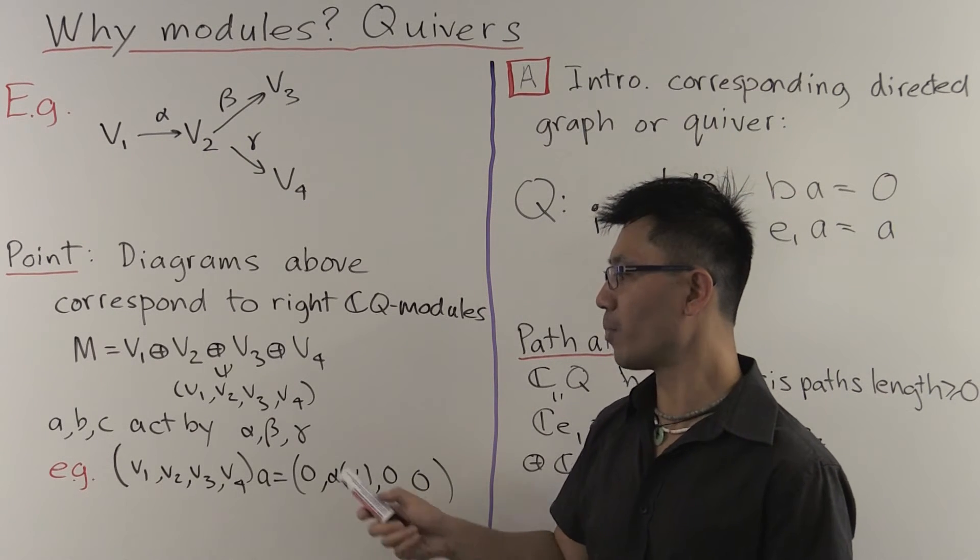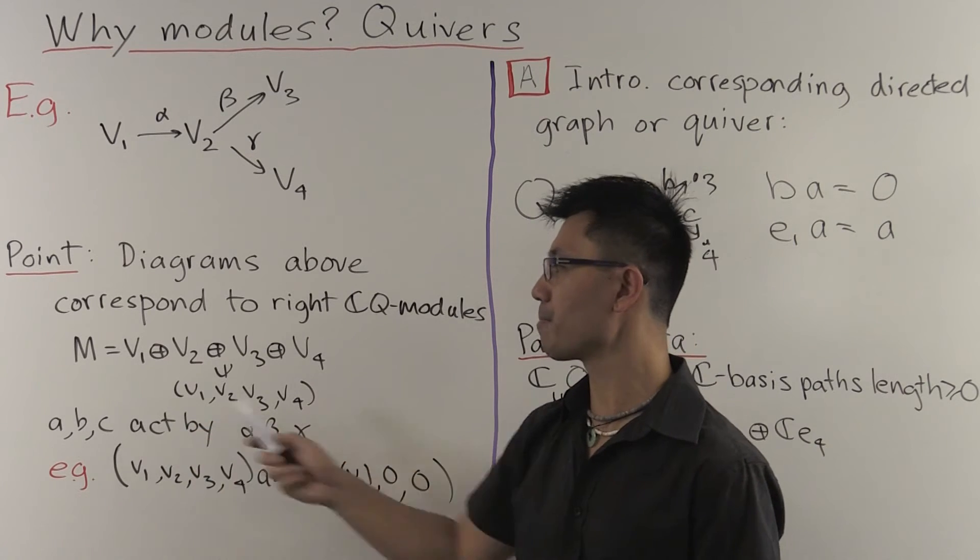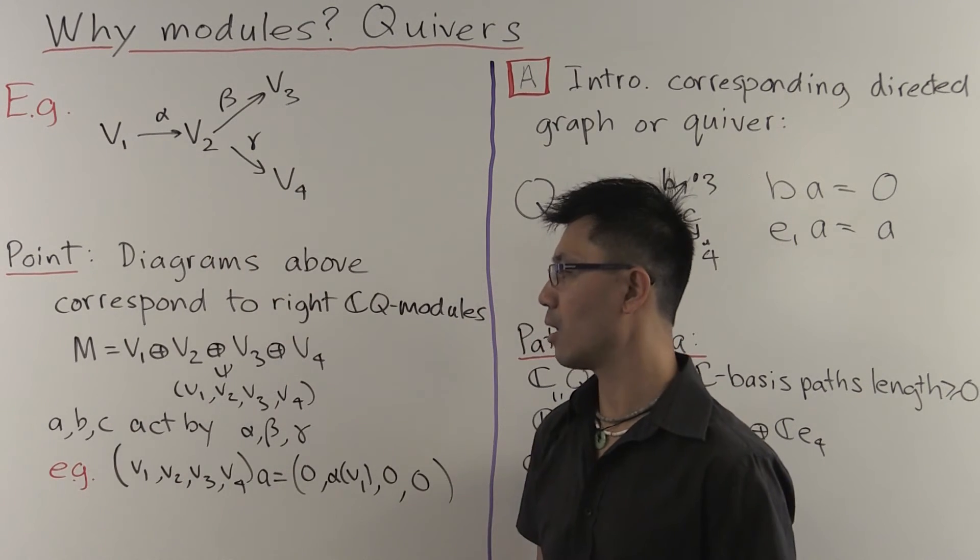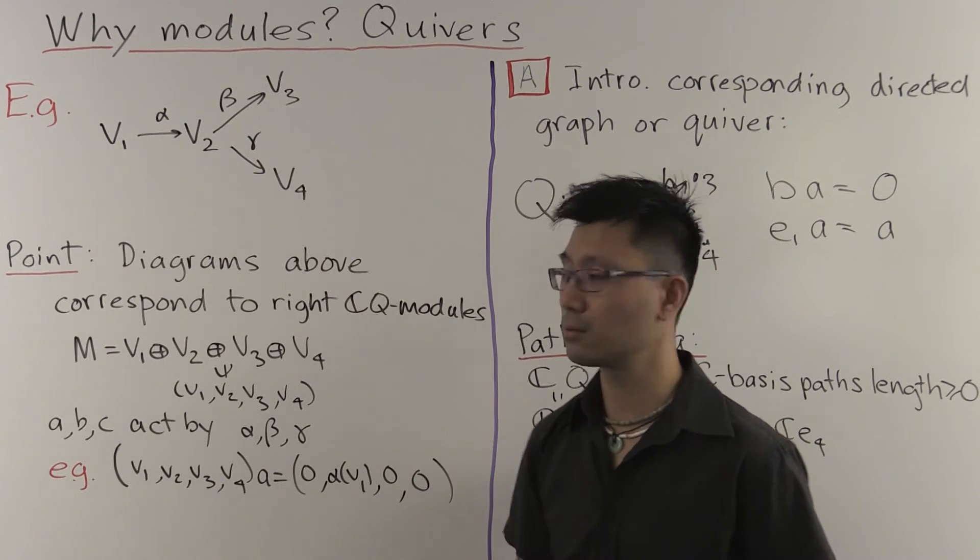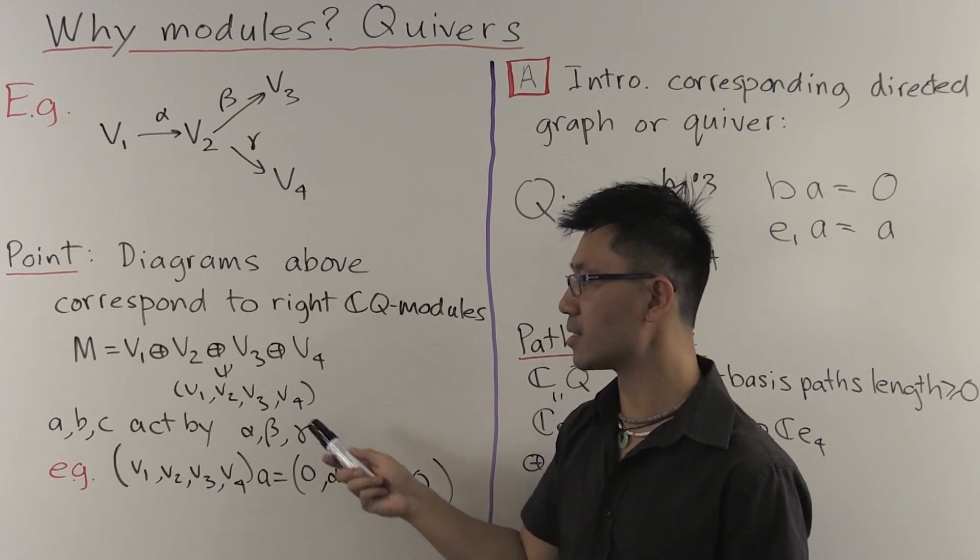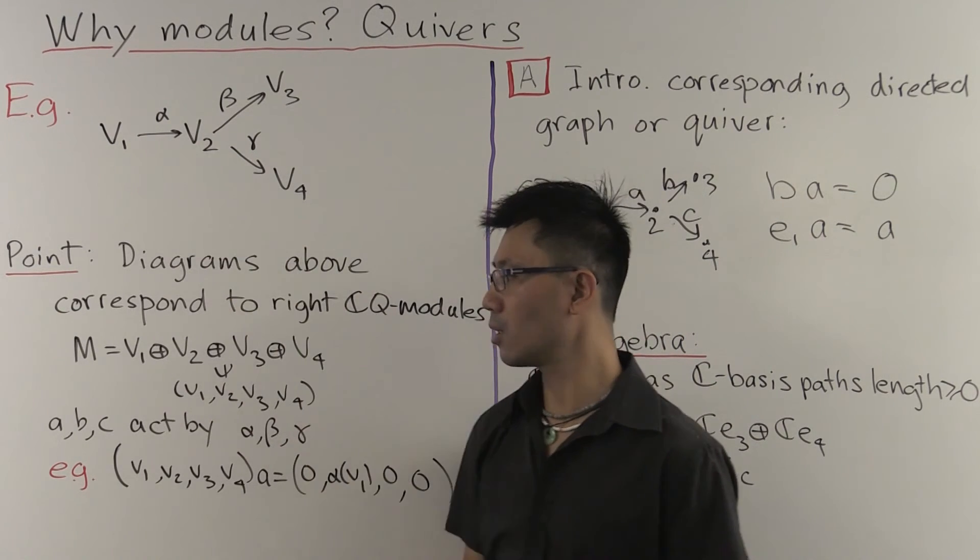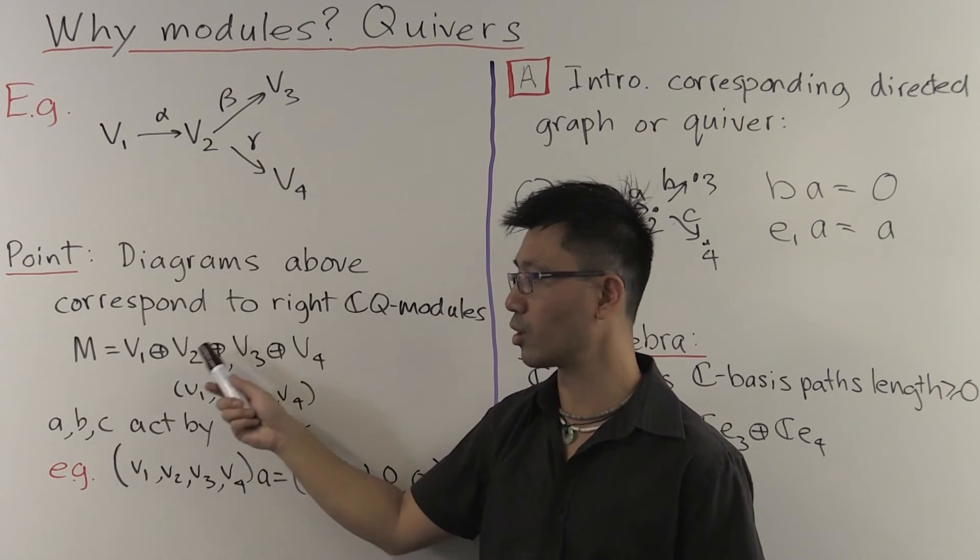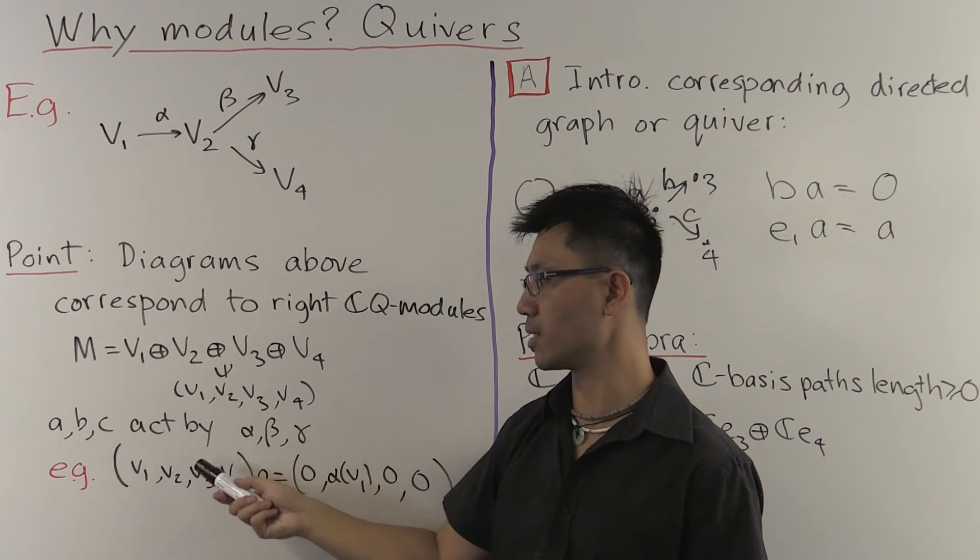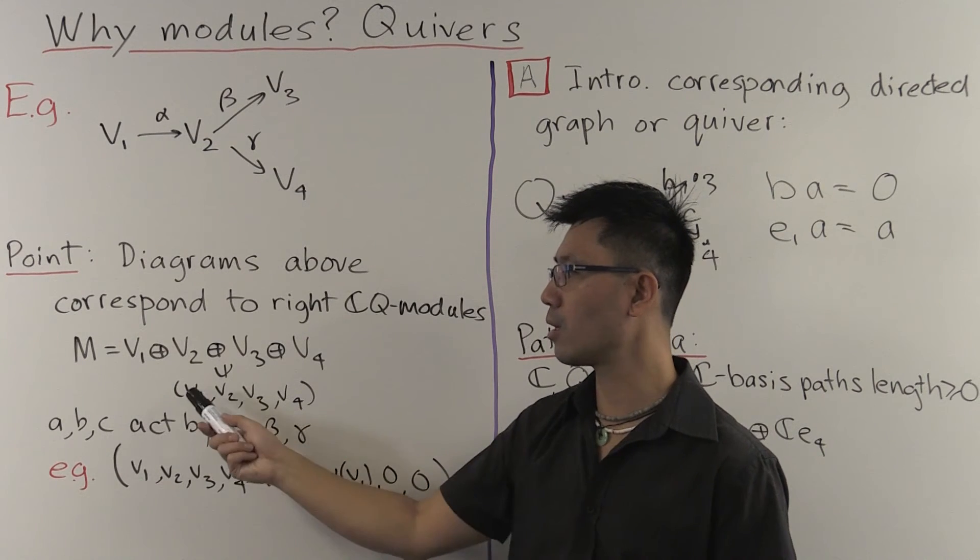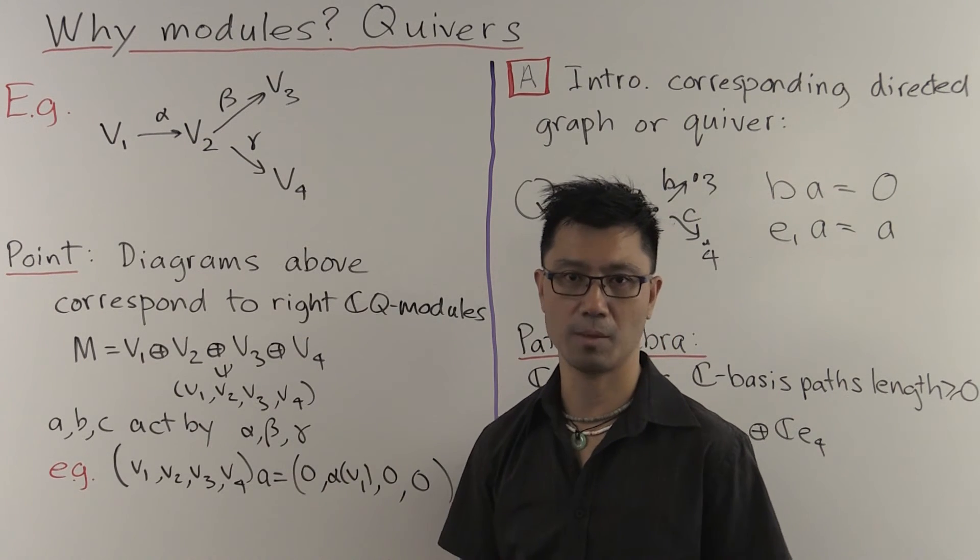If you want to multiply by AB, then you multiply by A first using alpha, and then B using beta. If you want to multiply by the other basis elements of length 0, such as E1, you just project onto the corresponding factor. So E1 just means that you send all of these V2, V3, V4 to 0, and you send V1 to V1.